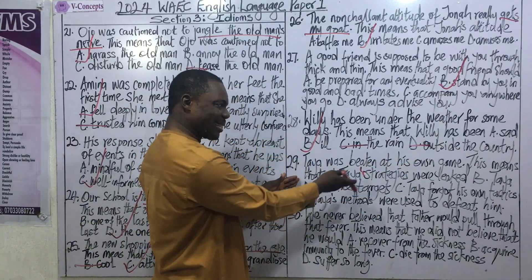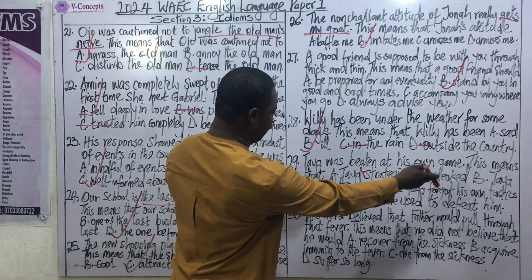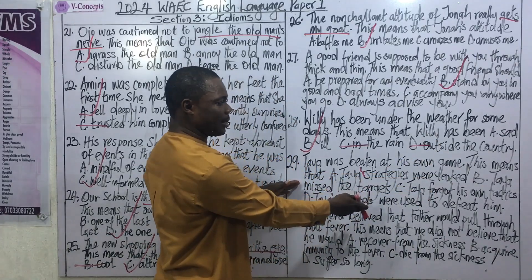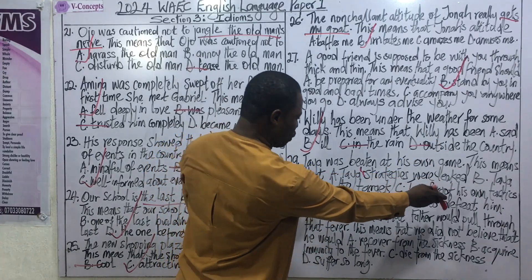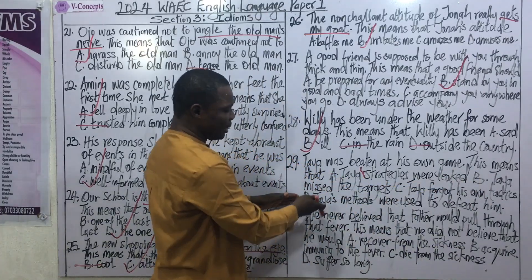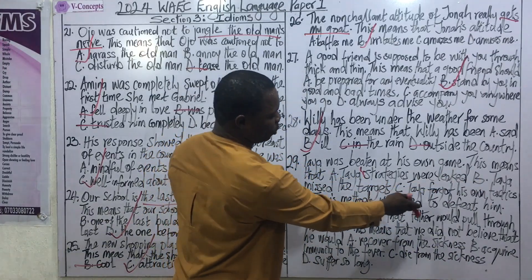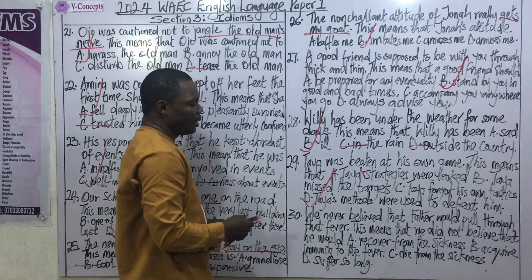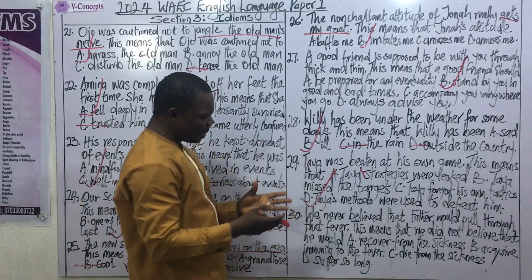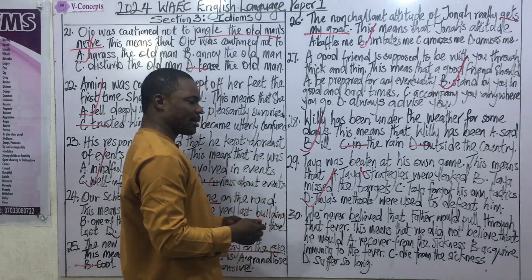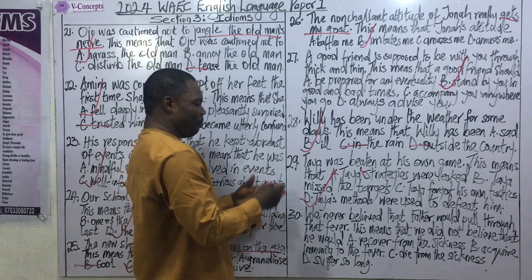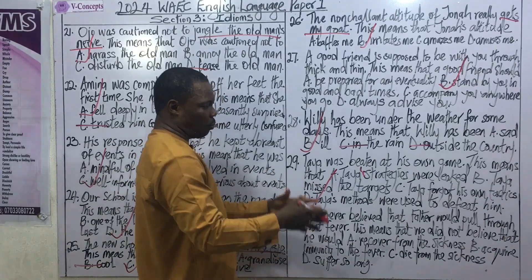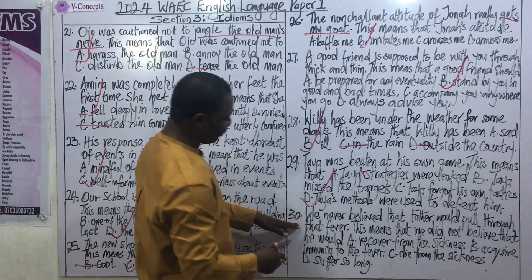Question 29: Adam was beating Tire at his own game. This means: A) Tire's strategy well-linked, B) Tire missed the target, C) Tire forgot his own tactics, D) Tire's method was used to defeat him. The correct answer is D. If someone is beaten at their own game, it means they were defeated using their own strategies or plans.